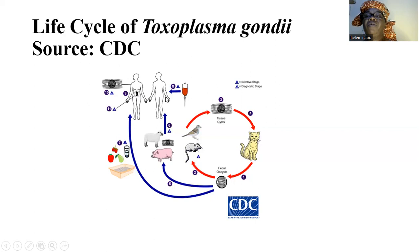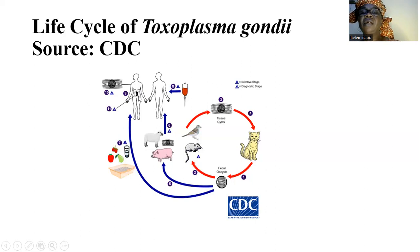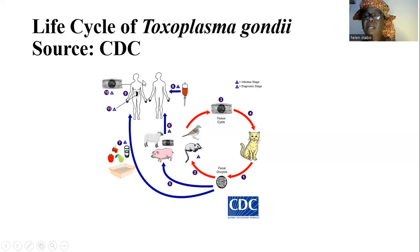The third route of infection is by blood transmission or through organ transplants. The fourth route of transmission to humans is by vertical transmission of Toxoplasma gondii from an infected mother to her unborn fetus. This completes the life cycle of Toxoplasma gondii.